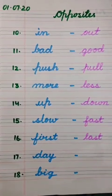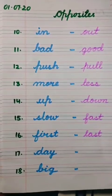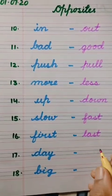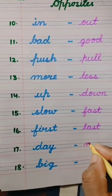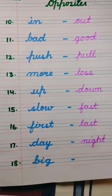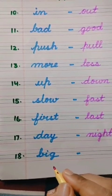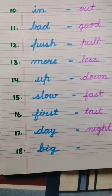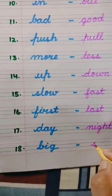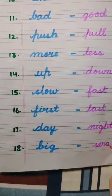Number seventeen: day — D-A-Y. During day we see the sun. Opposite of day is night — N-I-G-H-T, night. During night we can see the moon. Number eighteen: big — B-I-G. We saw big star and small star just now. So opposite of big is small — S-M-A-double-L, small.